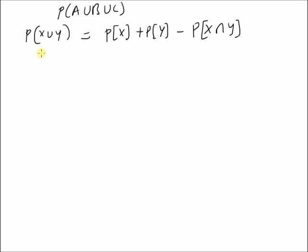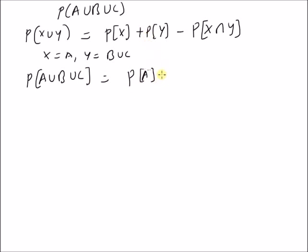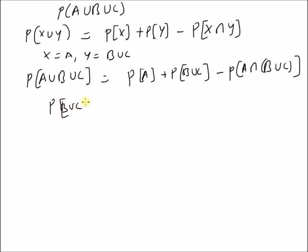By letting X equal to A and Y equal to B union C, we can write probability of A union B union C is equal to probability of A plus probability of B union C minus probability of A intersection (B union C). Again, by using the same formula, we can write probability of B union C is equal to probability of B plus probability of C minus probability of B intersection C.